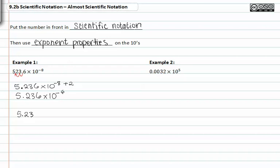5.236 times ten to the negative eight times ten to the two. Notice that when we multiply bases, we add the exponents and we get exactly the same thing, 5.236 times ten to the negative six.